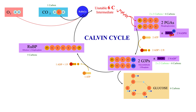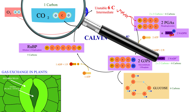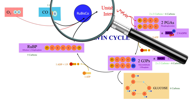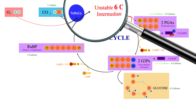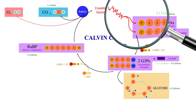Now we come to the light-independent reactions — in other words, the Calvin cycle. The purpose of this cycle is to use the high-energy molecules created in the light-dependent reactions to produce useful carbon-based molecules, such as glucose, out of RUBP and CO2 the plant absorbs from the surrounding air via its stomata. The first step of this cycle, in which CO2 is attached to RUBP, is catalyzed by the enzyme Rubisco. This process is termed carbon fixation, since carbon is being converted from a gaseous form as CO2 into a solid. The addition of CO2 to RUBP creates an unstable six-carbon intermediate, and this intermediate quickly breaks down into two three-carbon chains.